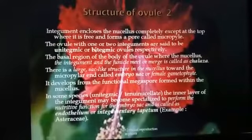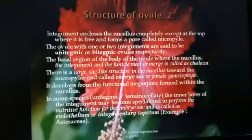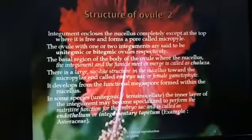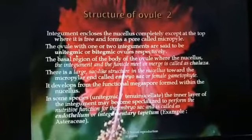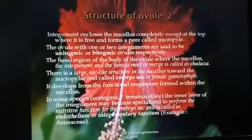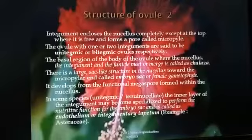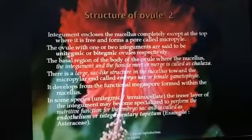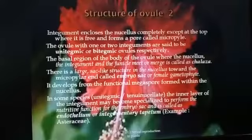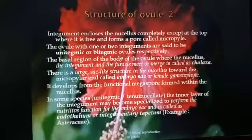Ovules are classified into two types based on the number of integuments: unitegmic and bitegmic. When the ovule contains a single integument or protective wall, it is called a unitegmic ovule. When it possesses two integuments, it is known as a bitegmic ovule.